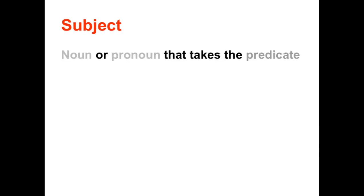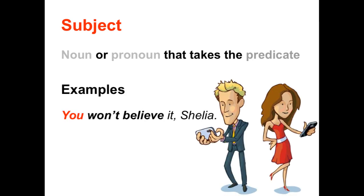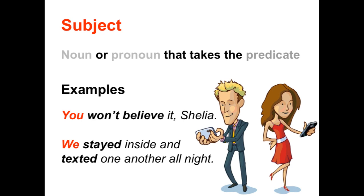Subjects are nouns or pronouns that take the predicate. Here are some examples of subjects. 'You won't believe it, Shalia.' To find the subject, we first should find the predicate. Then we ask ourselves, who or what is taking this predicate? In the first sentence, the predicate is the verb phrase 'won't believe.' So we ask ourselves, who or what won't believe? And in this case, it's the pronoun 'you,' which makes 'you' the subject of this sentence.